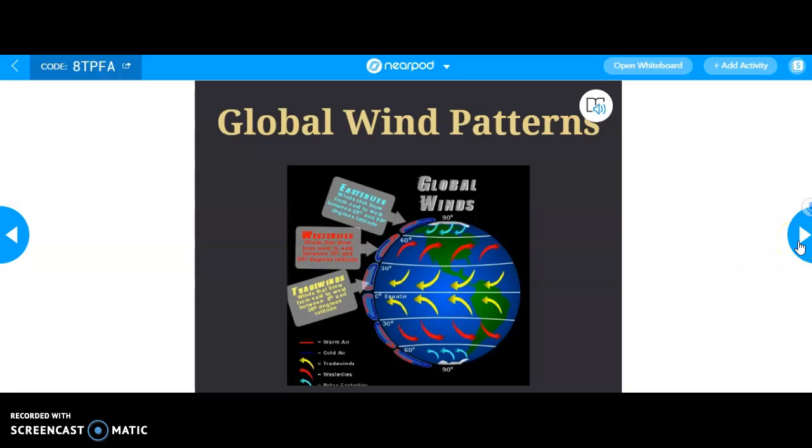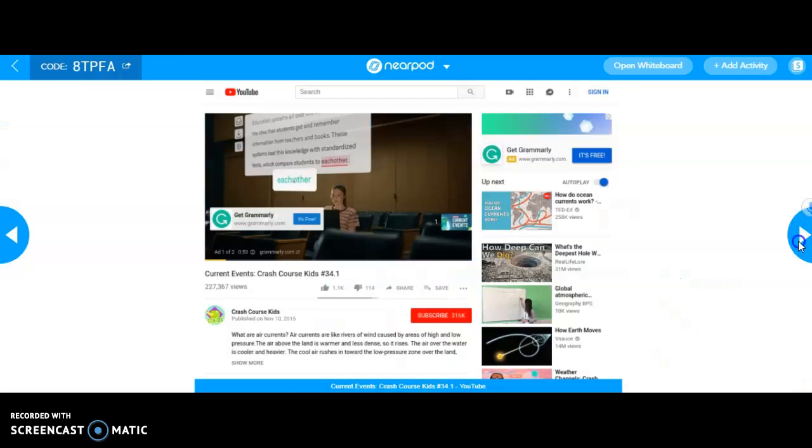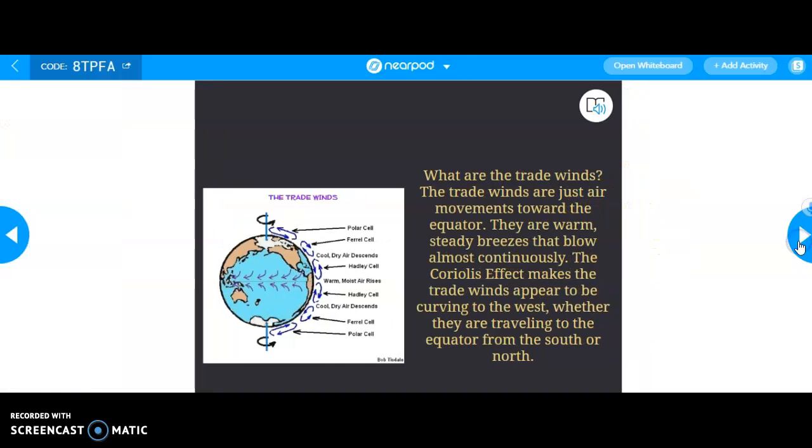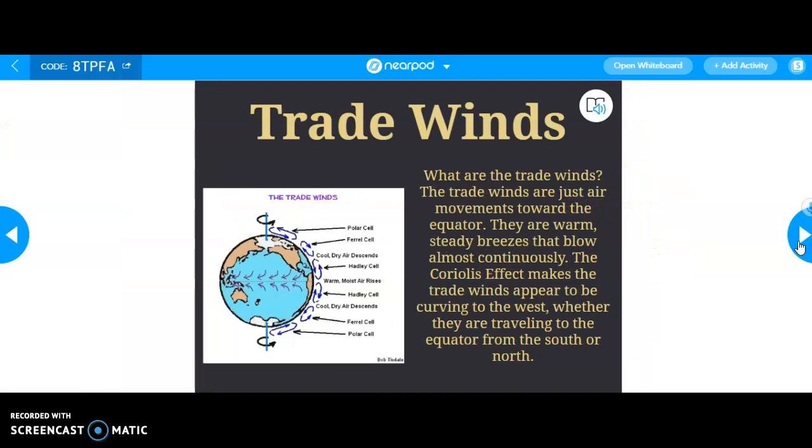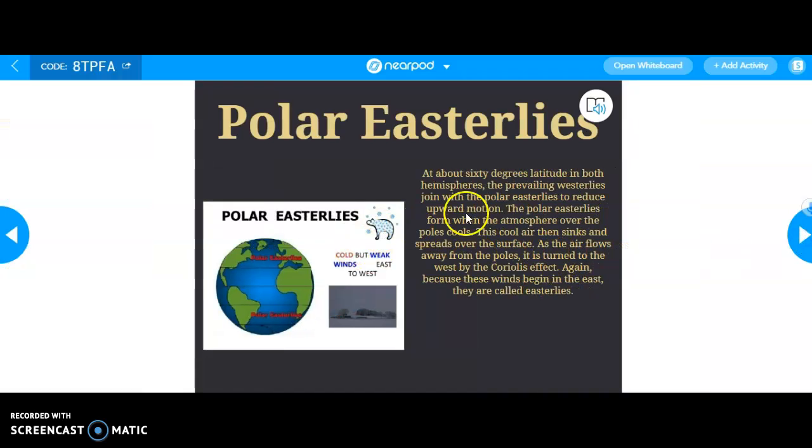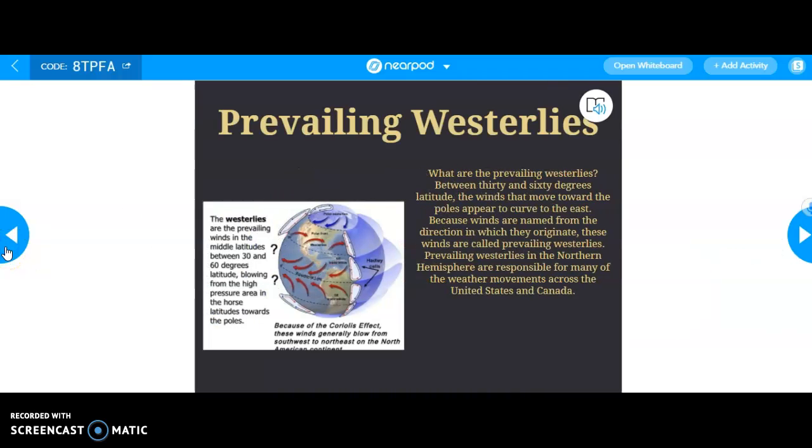Trade winds are the reason why hurricanes spin clockwise. That and the Coriolis effect is a big reason why, yes. And we're going to watch a video about that in a second. That's pretty tough. We'll spend some time on that. Prevailing westerlies - who needs another minute on that? Anybody else? Everybody good? All right.